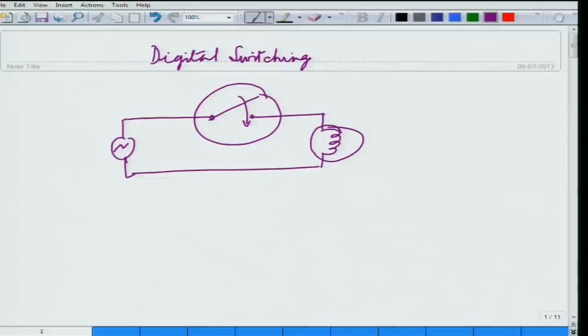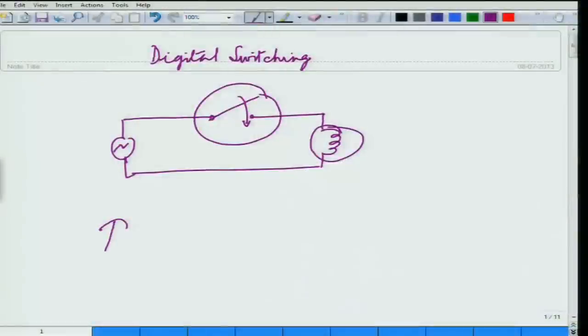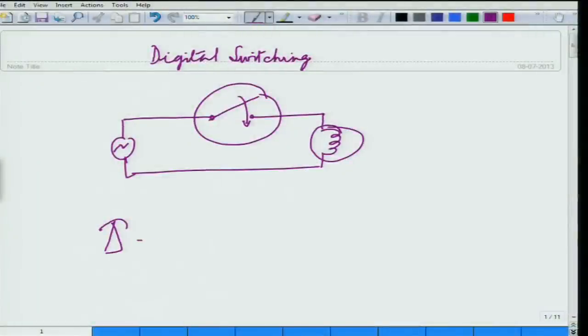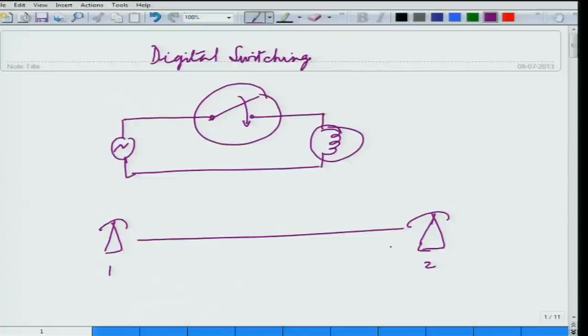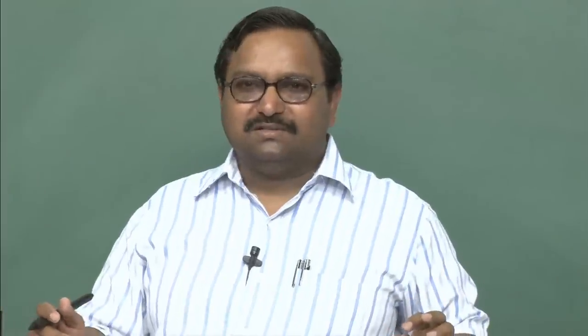Why do we actually require switching? Essentially it is a communication requirement. Usually for communication there will be a transmitter — putting up a telephone here and a telephone on the other end. User one wants to talk to user two; they can lay a line and start working. This is a point-to-point communication link which gets created between them and they will communicate. They can just lift the handset, they need some power source to energize both phones. But they are only two users, and this kind of communication system will actually not work.